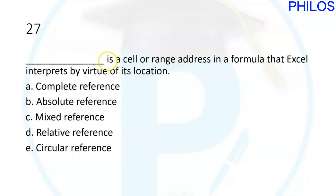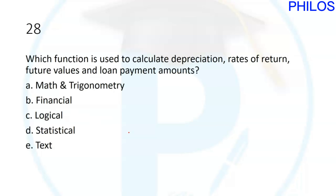Question twenty-seven: blank is a cell or range address in a formula that Excel interprets by virtue of its location. An address interpreted by its location is called a relative reference. The answer is relative reference.